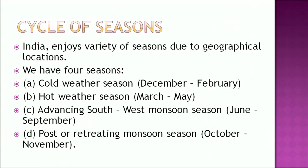Let's understand the cycle of seasons. India enjoys a variety of seasons due to its geographical location. We have four seasons: the cold weather season from December to February, the hot weather season from March to May, the advancing southwest monsoon season from June to September, and the post or retreating monsoon season from October to November.